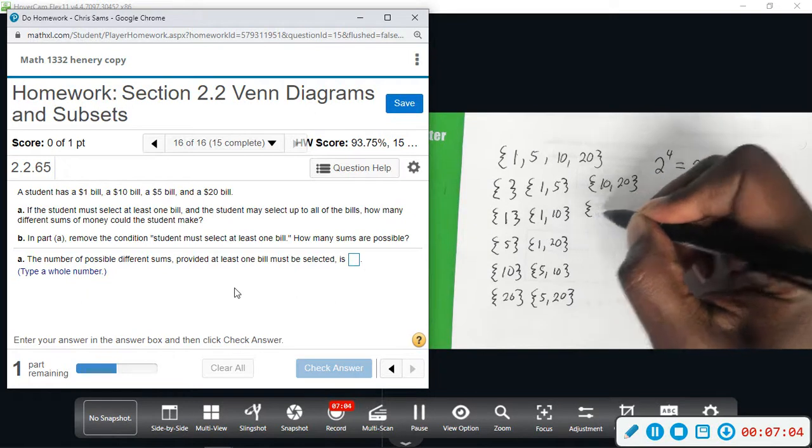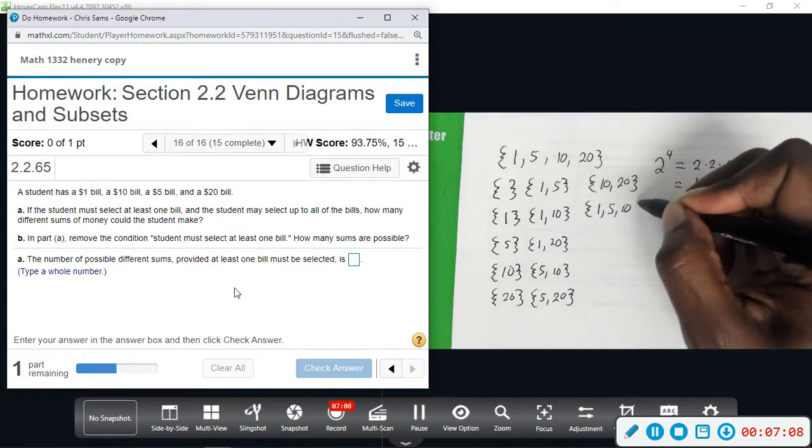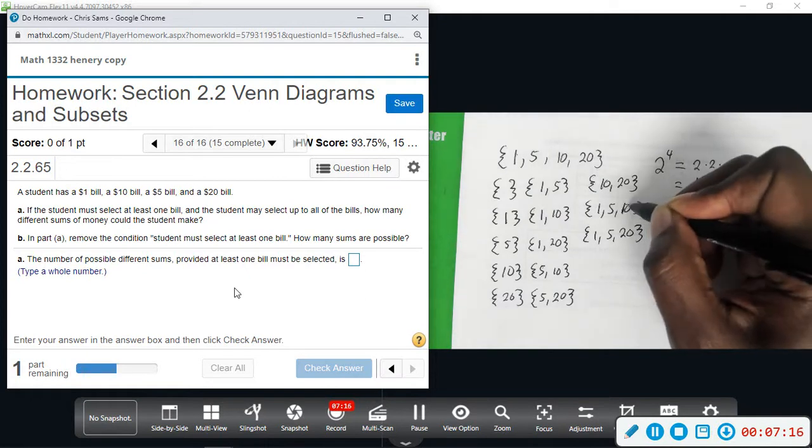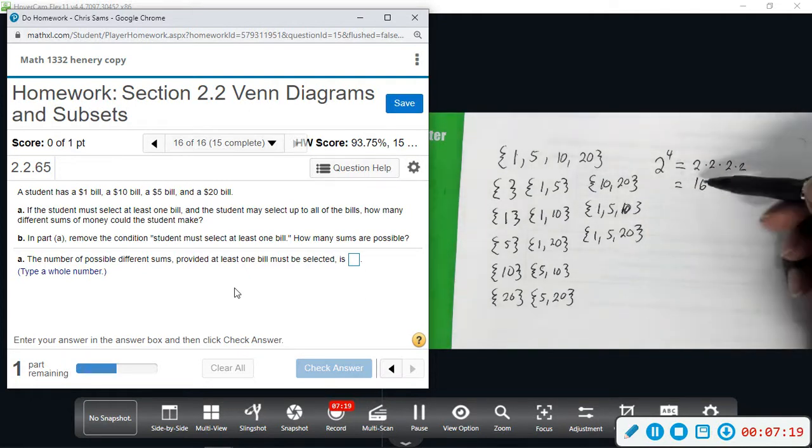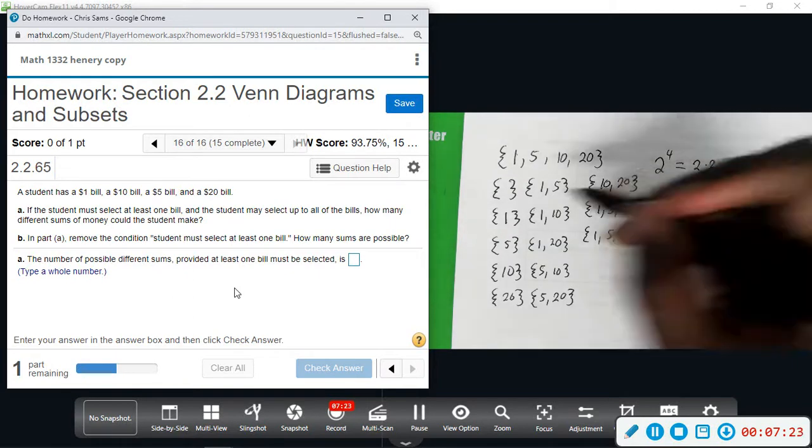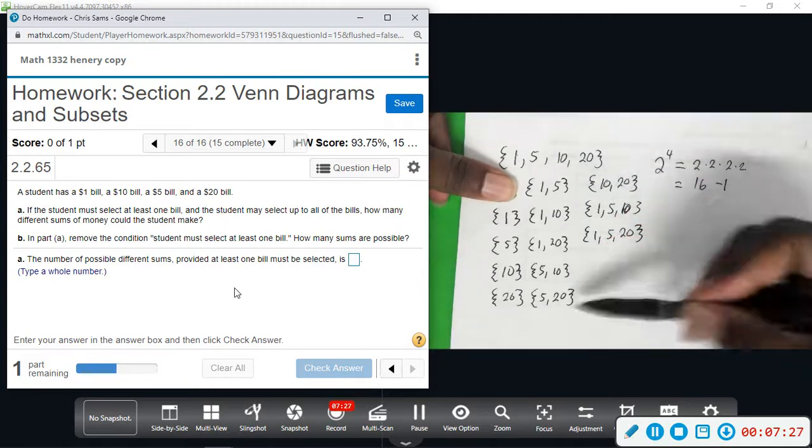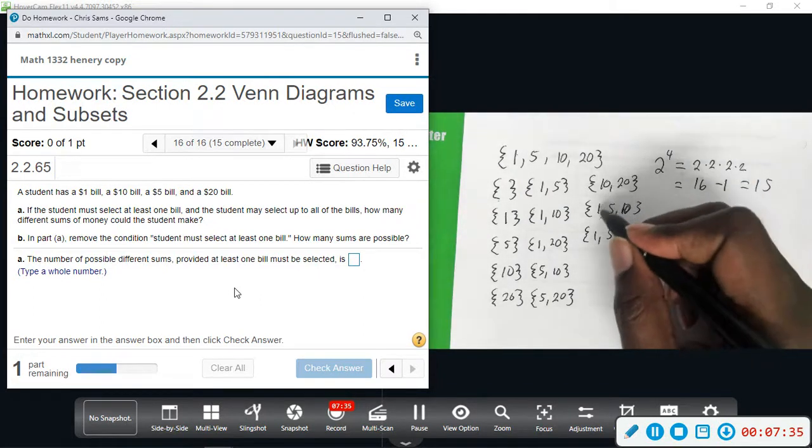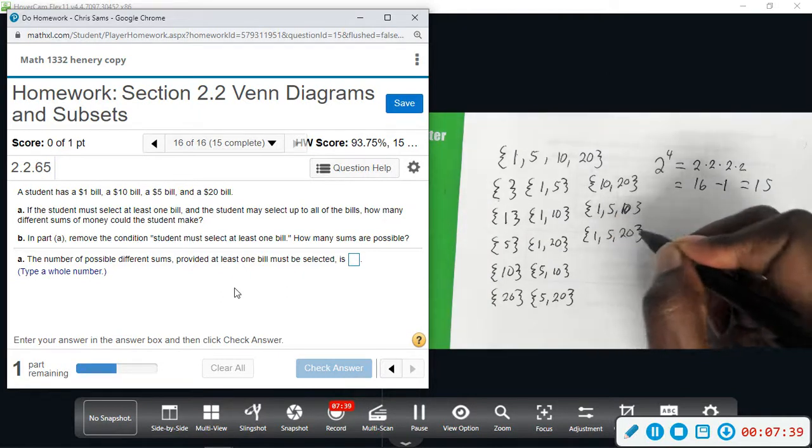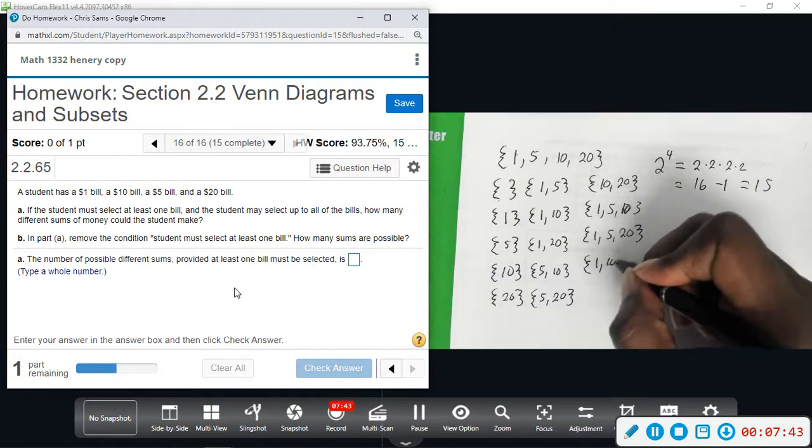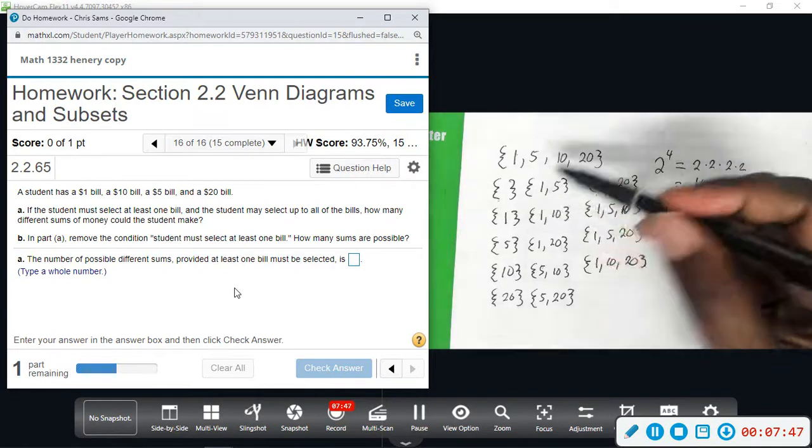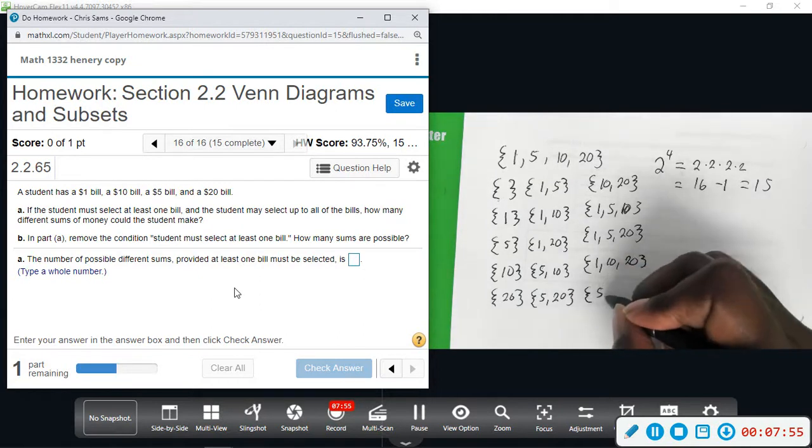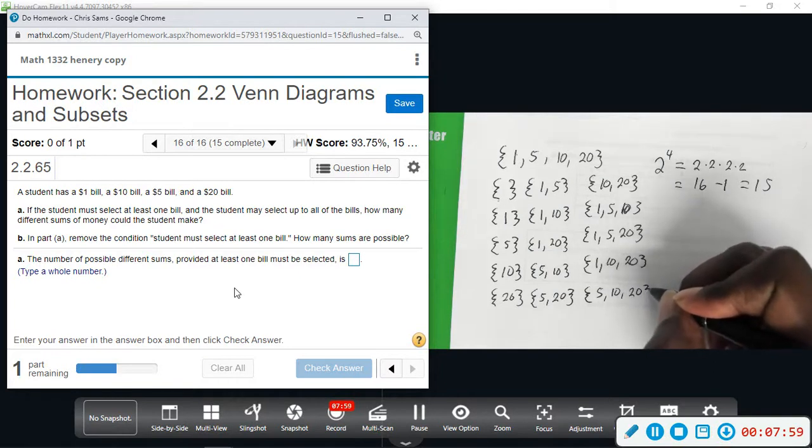Now we can choose three bills. So 1, 5, 10. 1, 5, 20. And again, for this problem, you don't have to actually list all of these, but you need to be able to count and understand that we're going to do 16, we're going to take away 1, the one scenario that doesn't have a bill. And you'll end up with 15 for this question. But I want you to see the visual. So I'm going through all of this. We've started with 1, 5 and 10. 1, 5 and 20. 1, 10 and 20. So that's combinations of three. We have a few more we can do. We can do 5, 10 and 20.